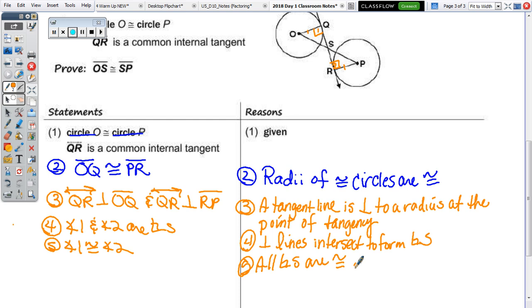And then I will, instead of numbering, since Logan did name them, I'll name the vertical angle. So that was angle OSQ congruent to angle RSP because all vertical angles are congruent. And then what shortcut proves the two triangles congruent? Angle, angle, side, good. So all vertical angles are congruent.